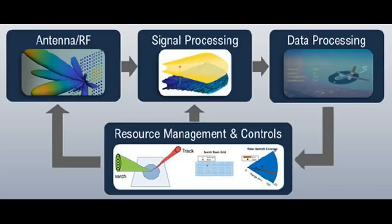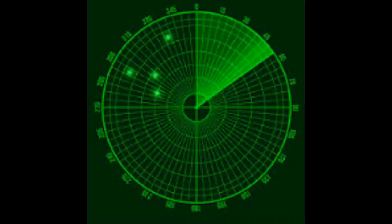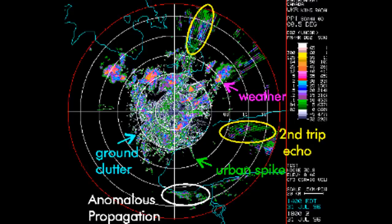A delay line canceller is a signal processing technique used in radar systems to reduce or eliminate unwanted echoes from stationary or slow moving objects such as ground or sea clutter.